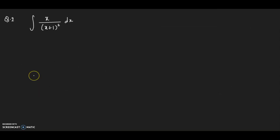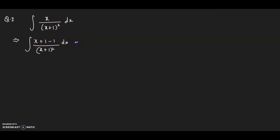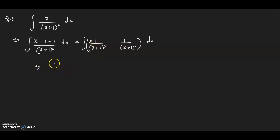Integration of x divided by (x+1)² dx. Let's see how to do this. I can add and subtract 1 in the numerator, separating it as (x+1) divided by (x+1)² minus 1 divided by (x+1)². So this will be integration of 1/(x+1) minus 1/(x+1)² dx.